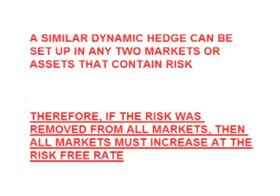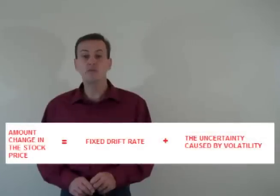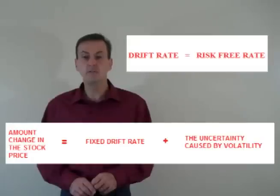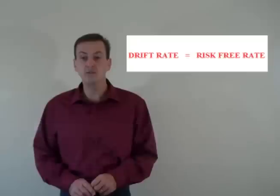Therefore, since the risk is removed, the total position must increase at the same rate as a fixed riskless investment. Since we can set up a similar dynamic hedge using any two markets, if we could remove the risk from all markets, then all markets must increase at the risk-free rate. The no riskless arbitrage argument proves that the drift rate is the risk-free rate, and it is this proof that is the centerpiece of the awarding of the Nobel Prize in Economics to the developers of the Black-Scholes formula in 1998. In my next video, I will discuss the two driving forces of price.